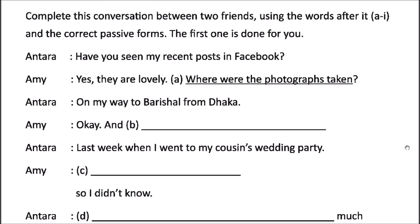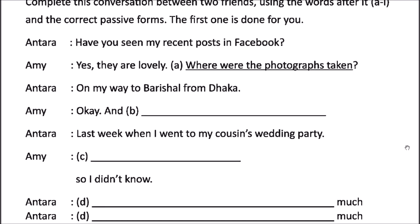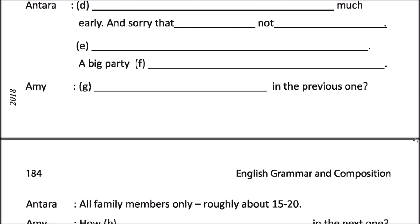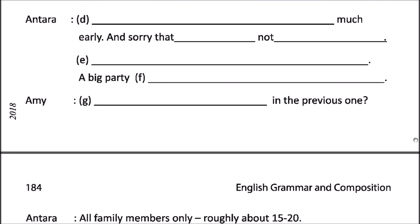After gap B, Antara says 'Last week when I went to my cousin's wedding party.' So the first question was where the photographs were taken, and Antara replied on her way to Borishal from Dhaka. You can guess what Amy says in number B. In number C it's about Amy's speech, and in number D Antara is again answering. Go through the conversation and write every sentence in passive voice. If you're not sure, review the active and passive voice chapter again.